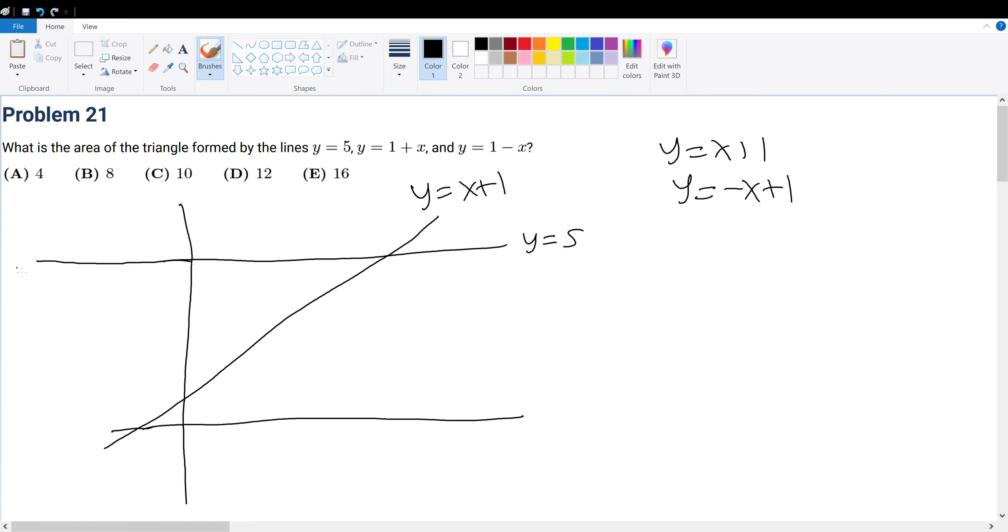We're trying to find this area right here. To do that we can do coordinate geometry—I think that would be the easiest one here. Or rather, this is a triangle, right? We can find the height and the base. So let's just find the height and the base.